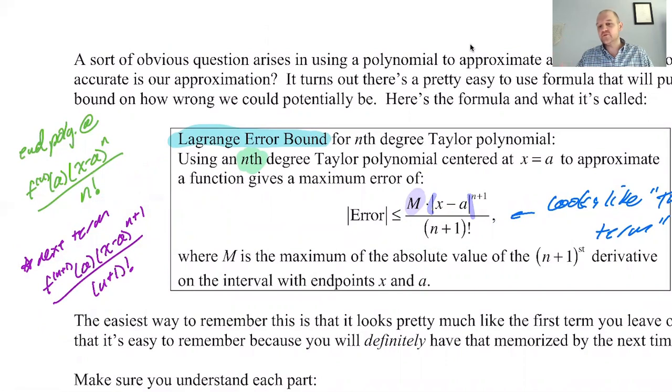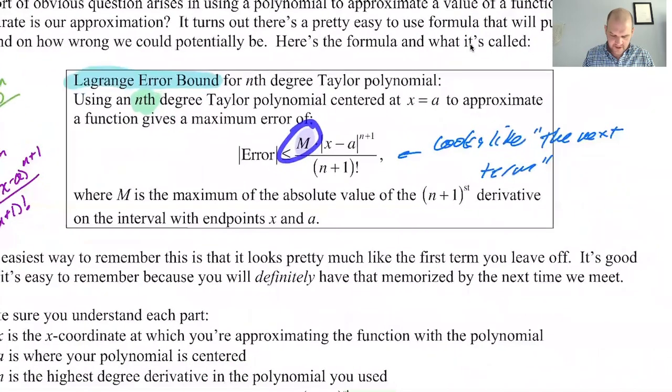Now the absolute value, what that's doing is it's guaranteeing that you get a positive out of this thing, because we're doing the absolute value of the error is less than or equal to. So we have to put an absolute value there to make sure we get a positive, because you might be taking it to an odd power. And if it was a negative to an odd, it'd be negative. So we put absolute value. This m is because we don't actually know what to use there. So that's really where the boundary is coming from.